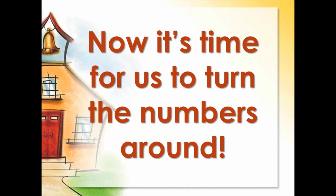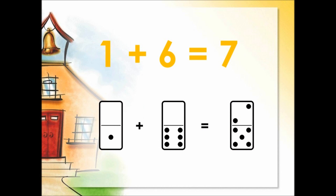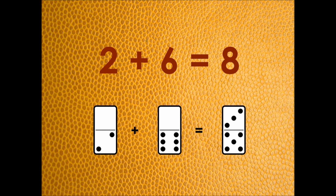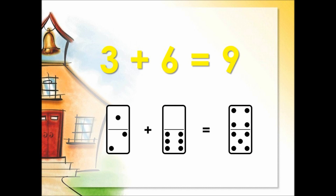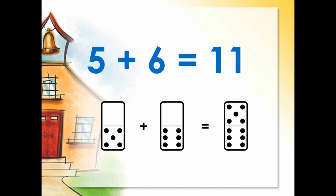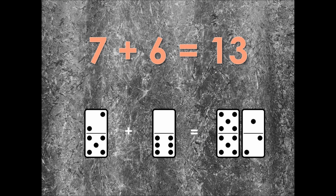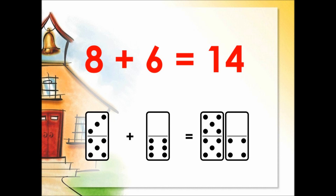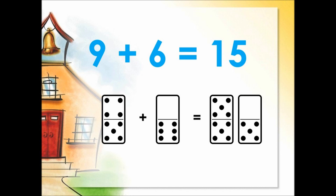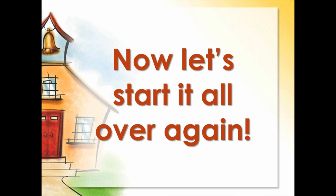Now it's time for us to turn the numbers around. Zero plus six is six. One plus six is seven. Two plus six is eight. Three plus six is nine. Four plus six is ten. Five plus six is eleven. Six plus six is twelve. Seven plus six is thirteen. Eight plus six is fourteen. Nine plus six is fifteen. Ten plus six is sixteen. Now let's start it all over again!